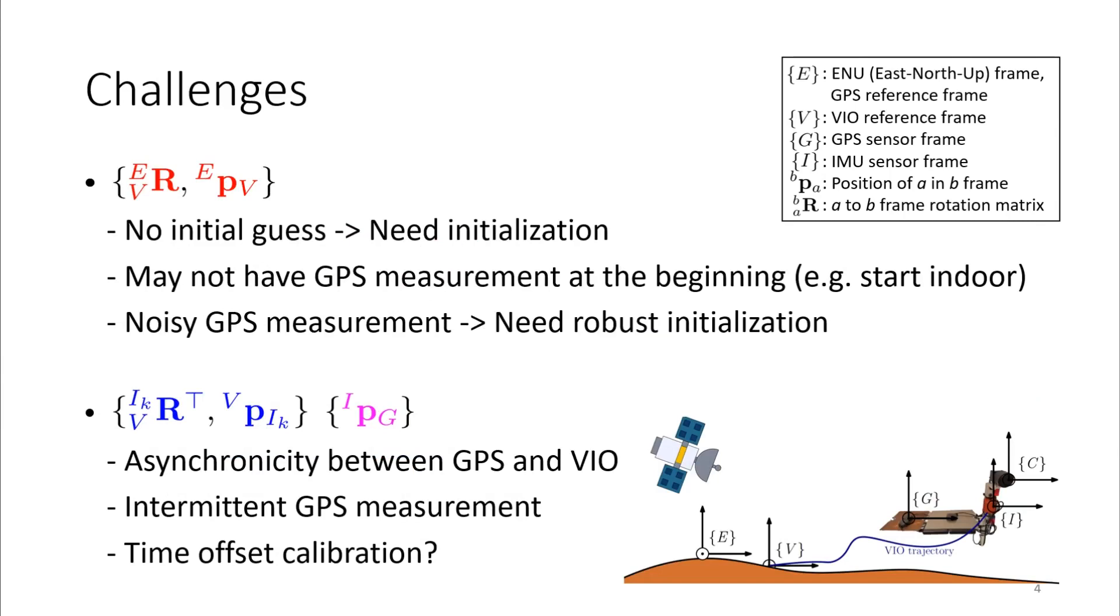However, knowing all of these parameters is challenging for many reasons. For the reference frame transformation, it is very hard to have the initial guess of this transformation. This is because both GPS and VIO can set up an arbitrary point as its reference frames.